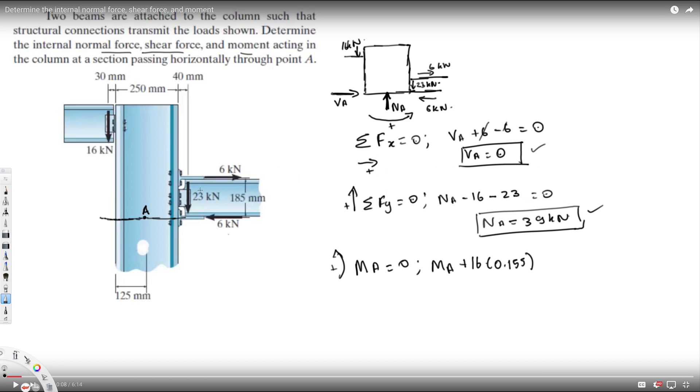Then we have 23 kilonewtons making moment, acting clockwise, so it's negative 23 times 165 millimeters, which is 0.165 meters. This 6kN doesn't make any moment because it's along A, but this 6kN makes moment. It's acting clockwise, so negative 6 times 0.185 equals zero.